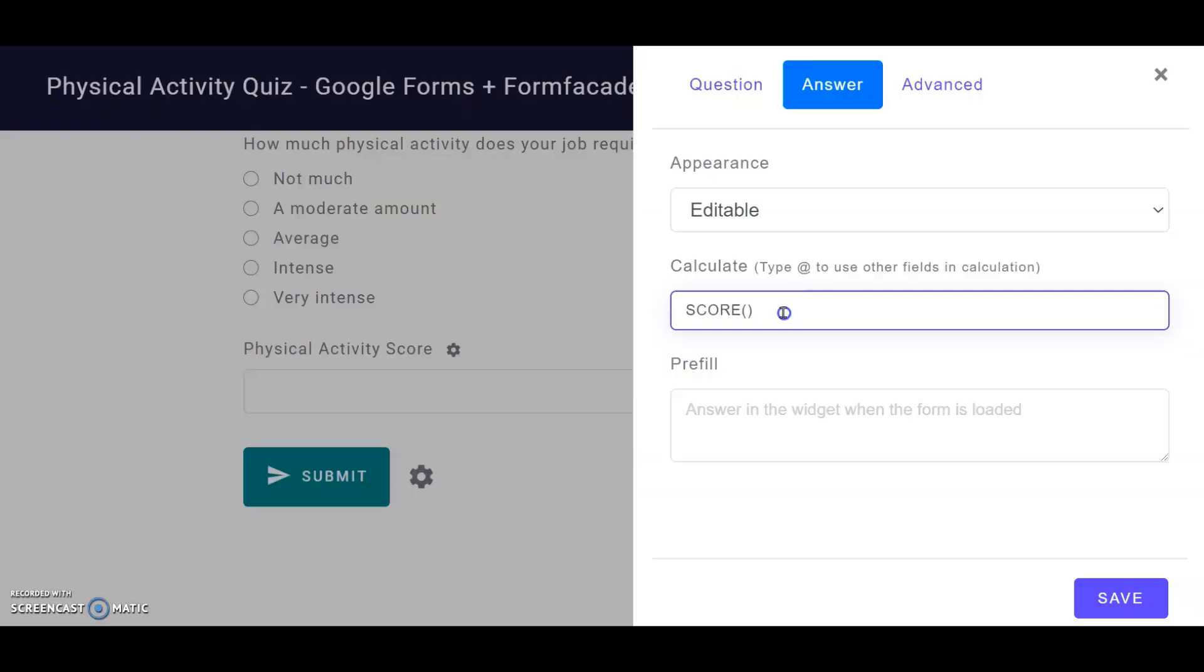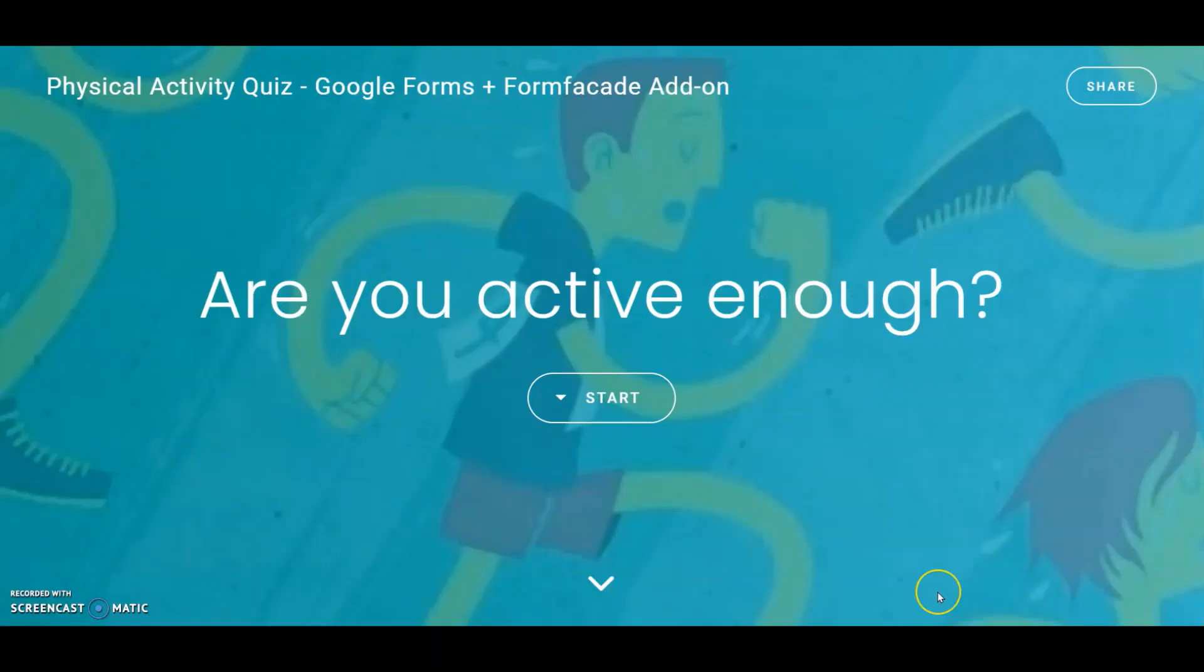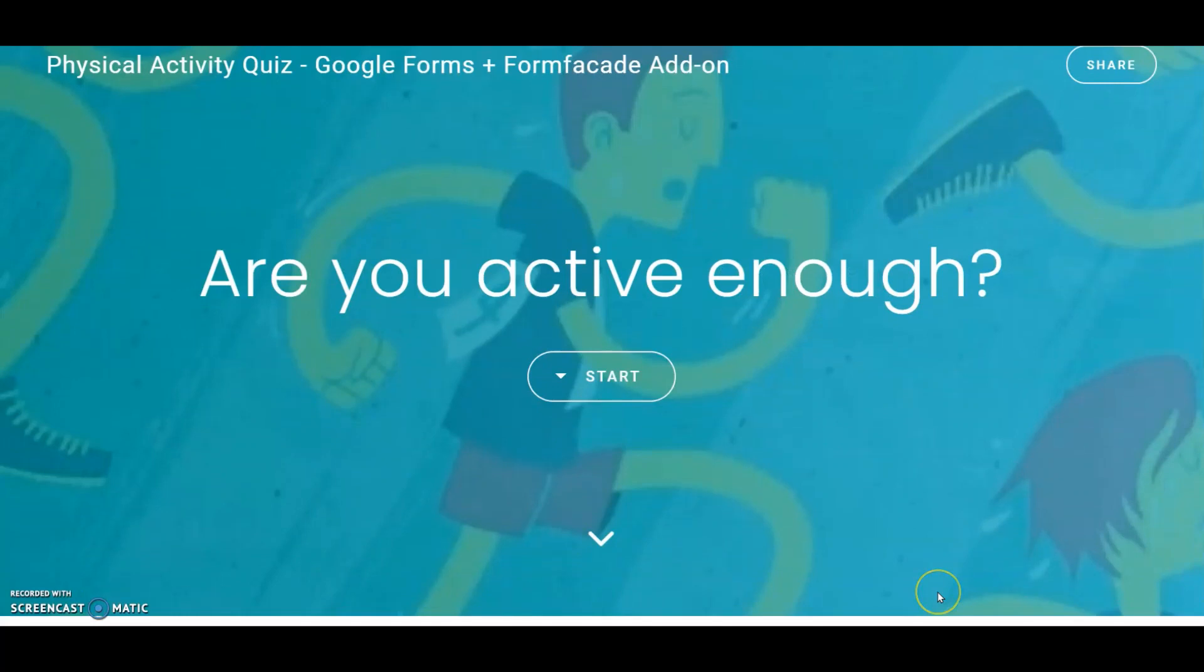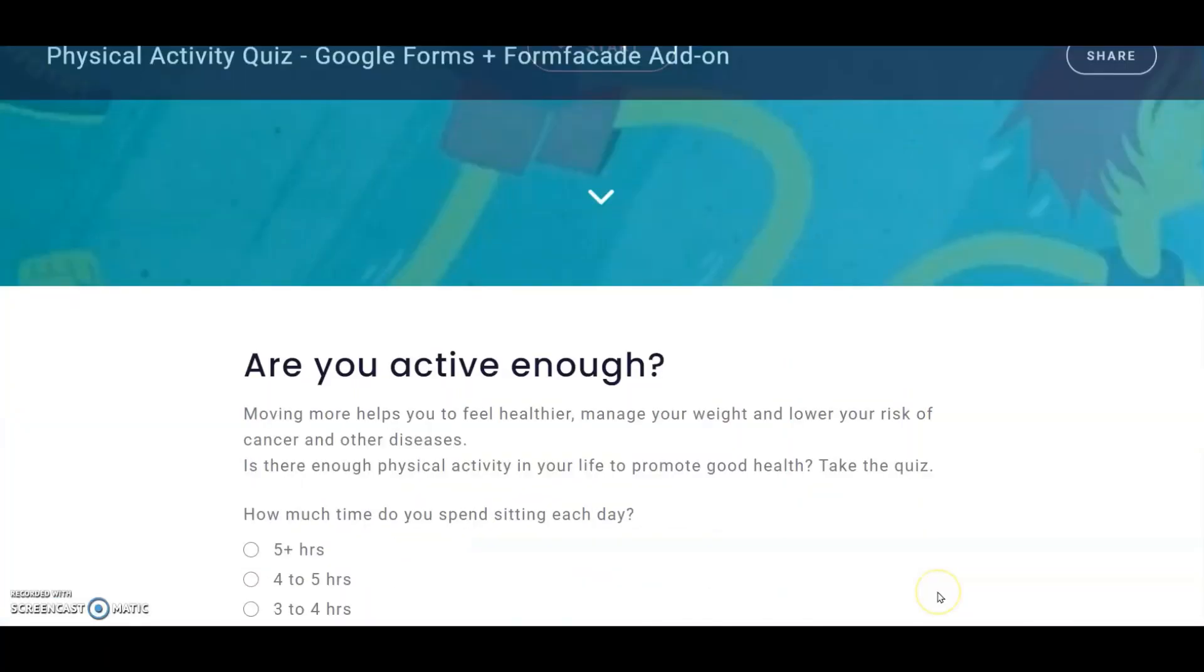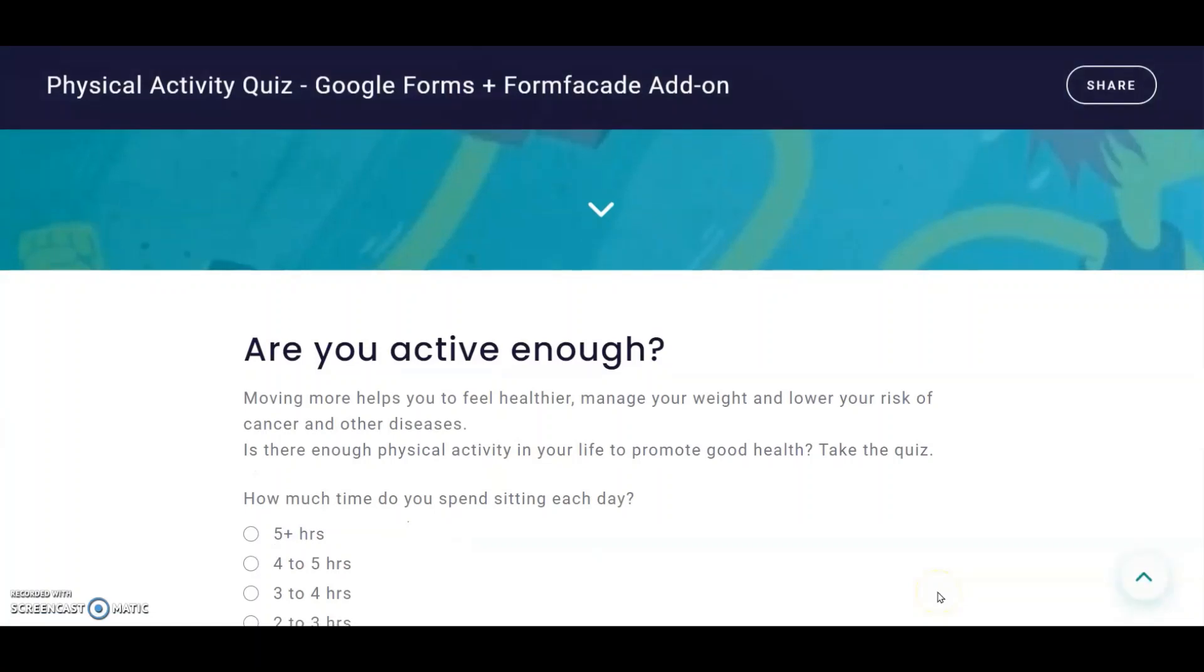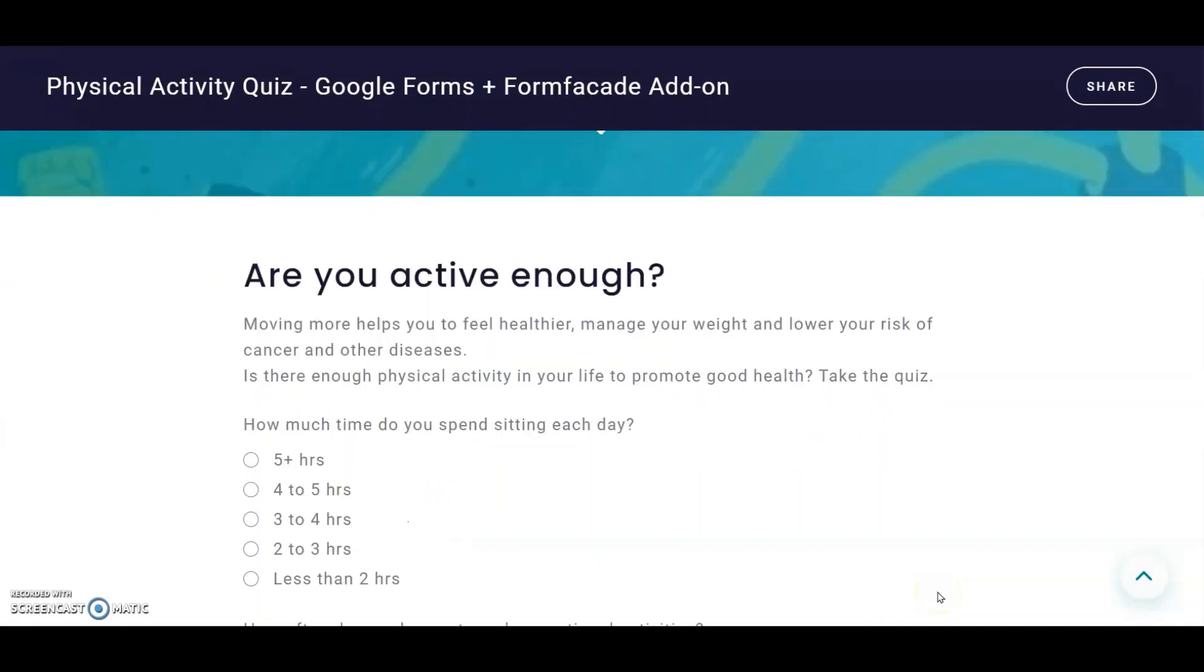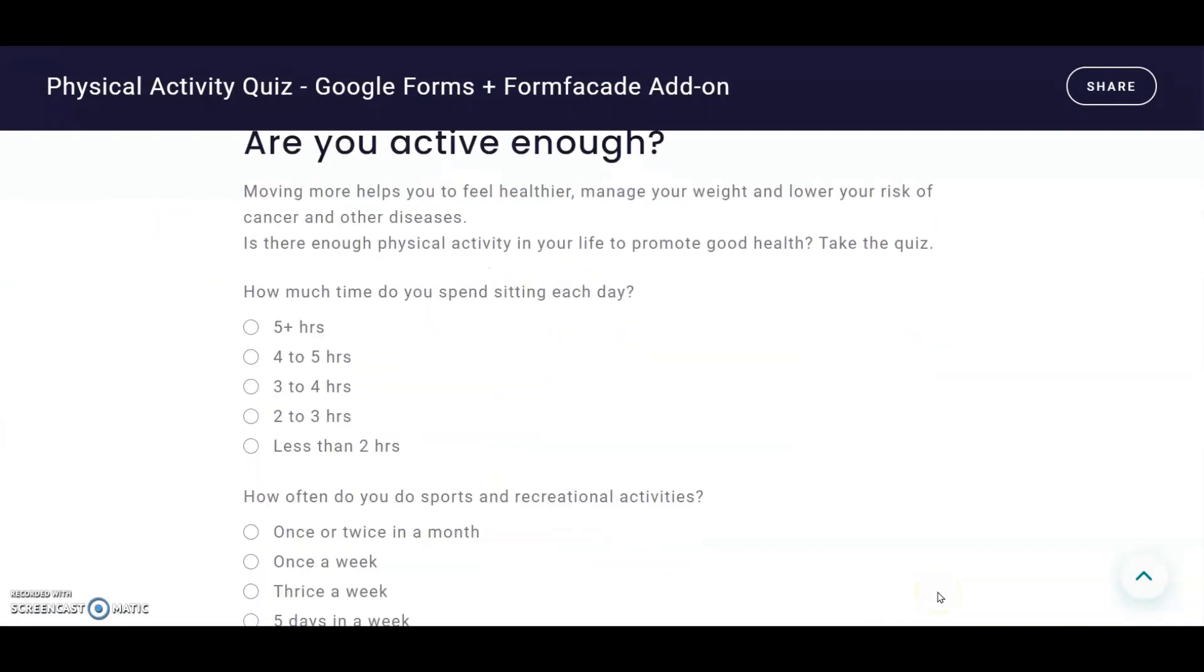In this example, I have already arranged my answer choices in an ascending point value range, so I will use score all 1, 2, 3, 4, 5 to calculate the total physical activity score. My scoring logic is that the higher the score, the higher the physical activity of the respondent, and therefore the higher their health benefits. If someone gets to the lower end, say below 9, then their physical activity is less and they need to get started with some exercises regularly.